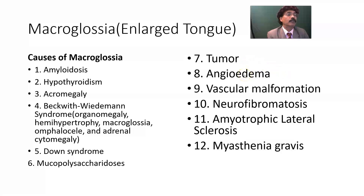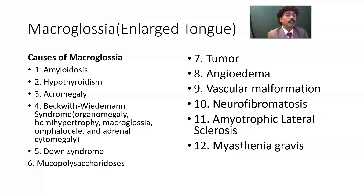Angioedema may be associated with some type of allergic reaction — even eating something which is allergic to a person. Vascular malformation, neurofibromatosis, even CNS diseases like amyotrophic lateral sclerosis may be associated with macroglossia. Myasthenia gravis, a disease of the neuromuscular junction, may also be associated with macroglossia.